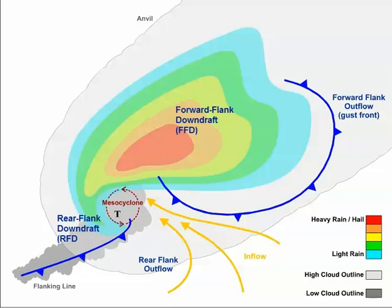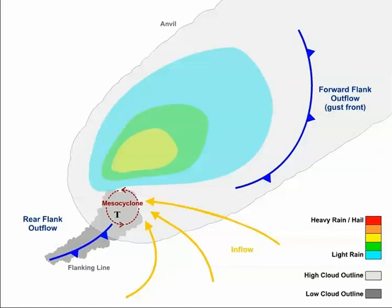But not all supercells are this classic. Depending on the upper level winds, sometimes supercells don't display a hook echo at all. Sometimes supercells take on more of a pendant shape, where you can see all of the precipitation falling in the forward flank downdraft, but the rear flank downdraft isn't very prominent and contains little or no precipitation. These supercells can still produce a tornado near the T in the mesocyclone, even though they don't display a hook echo on radar.